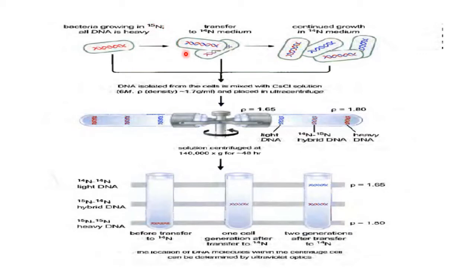They then transferred the cells to a normal N14 medium and allowed them to duplicate for one generation, meaning every cell divided only once. This caused the DNA to replicate only once using the N14 medium. Again, the cells were transferred to a second N14 medium and allowed to duplicate for one more generation. In each step of this experiment, they isolated the DNA and centrifuged it to observe the band position of the DNA.